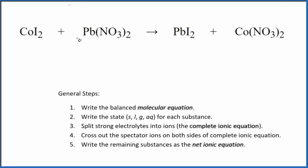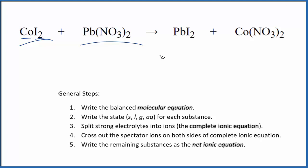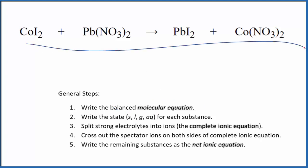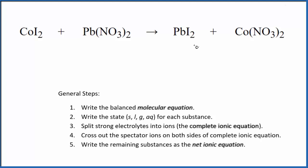Let's write the balanced net ionic equation for CoI2 and Pb(NO3)2. This is cobalt-2 iodide, and then we have lead-2 nitrate. The first thing we need to do when we balance net ionic equations is balance the molecular equation. This is the molecular equation, and it looks like it's already balanced, so that makes it kind of nice.